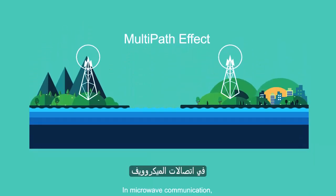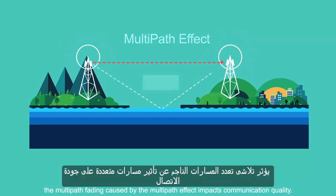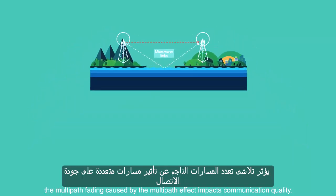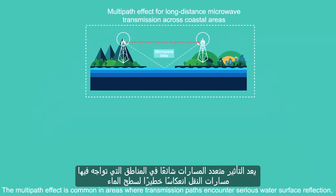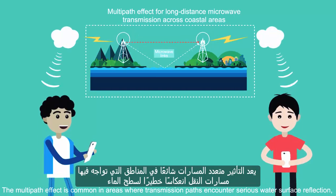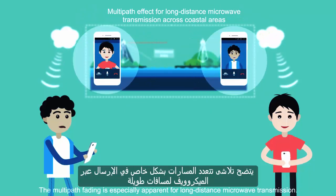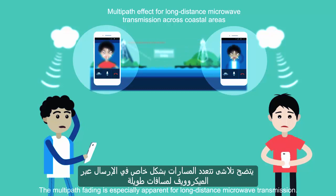In microwave communication, the multipath fading caused by the multipath effect impacts communication quality. The multipath effect is common in areas where transmission paths encounter serious water surface reflection, such as coastal or lake areas. The multipath fading is especially apparent for long-distance microwave transmission.